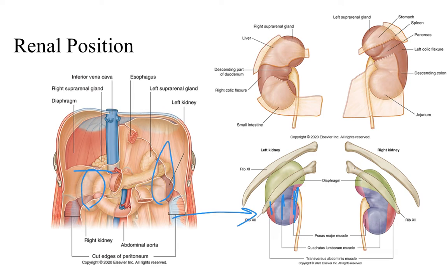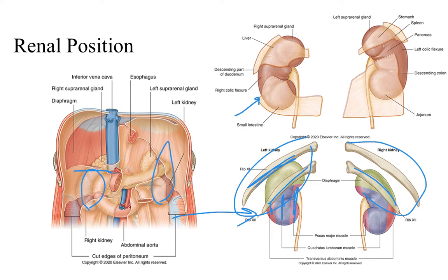Looking at this picture, we see that the kidneys lie anterior to the transversus abdominis muscle, the quadratus lumborum muscle, as well as the psoas major muscle. So the kidneys are not directly against the skin — they are underneath a sheet of muscle that also offers some protection.